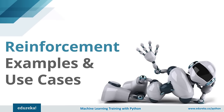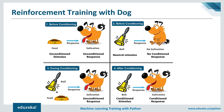Pavlov trained his dog using reinforcement learning in four stages: first, he gave meat to the dog, which caused salivation. Next, he created a sound with a bell — the dog didn't respond. Then he conditioned the dog by ringing the bell before giving food. Eventually, the dog started salivating just after hearing the bell, even without food, because it was reinforced that the bell signals food.